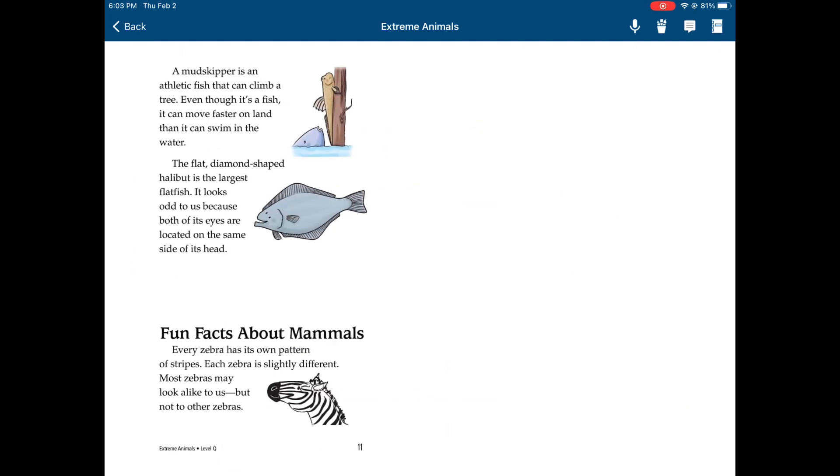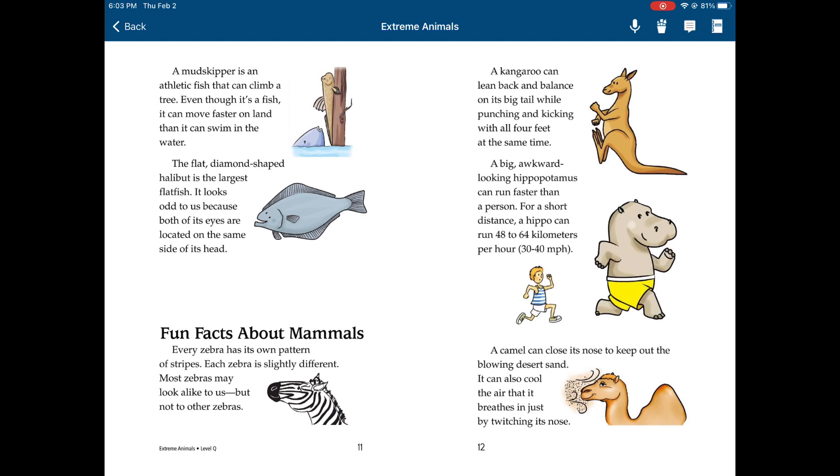A mudskipper is an athletic fish that can climb a tree. Even though it's a fish, it can move faster on land than it can swim in the water. The flat, diamond-shaped halibut is the largest flatfish. It looks odd to us because both of its eyes are located on the same side of its head.